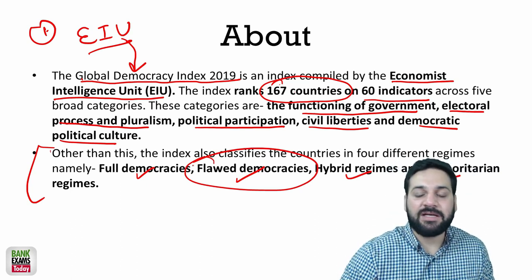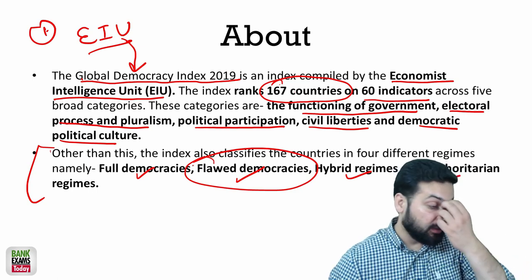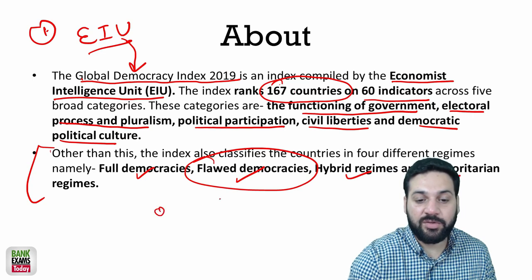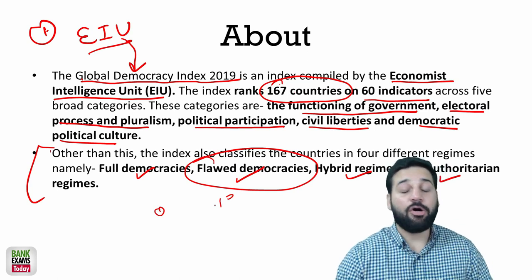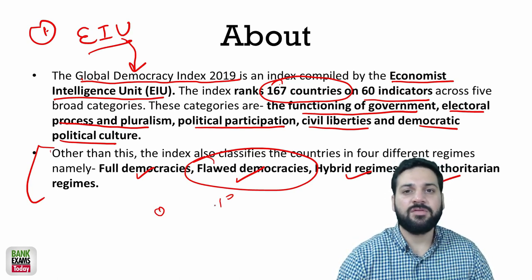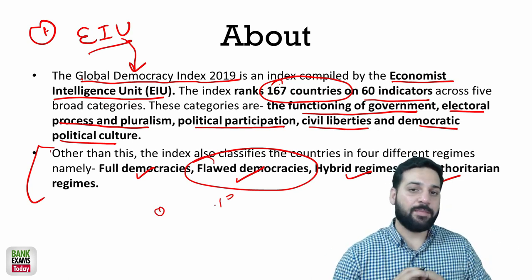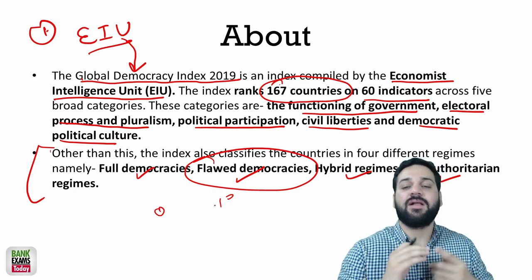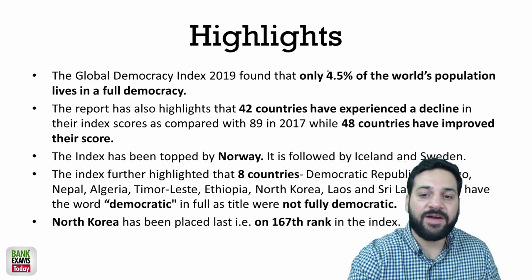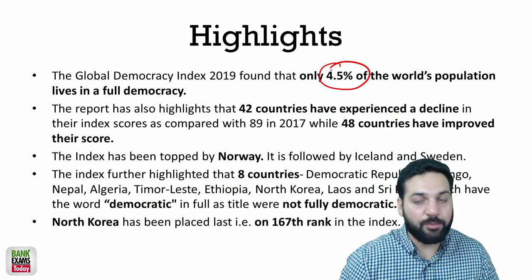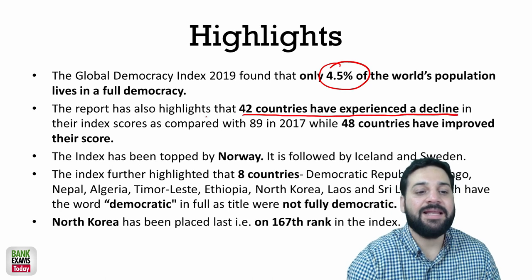India is a flawed democracy because the press and media are not free, and there are problems in the political culture. The scoring is given from zero to ten; India's score is around 7-point-something. Australia, Norway, Sweden, and New Zealand are full democracies. In the Asia-Pacific region, Australia and New Zealand are the only full democracies. Only 4.5 percent of the world's population lives in a full democracy.